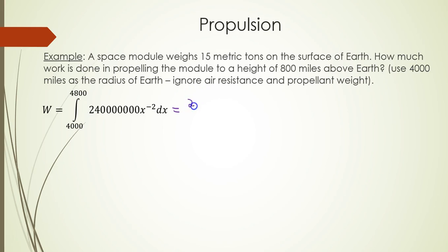So you do get 240,000,000 x to the negative first over negative one. And you're going to evaluate from the upper bound as x equals 4,800 and the lower bound as x equals 4,000.